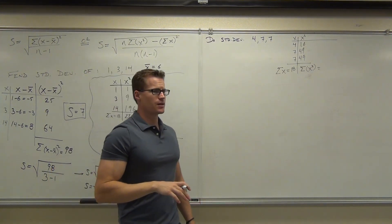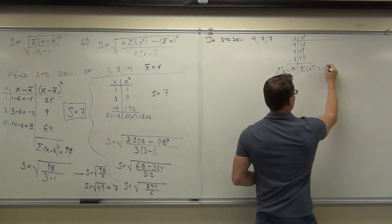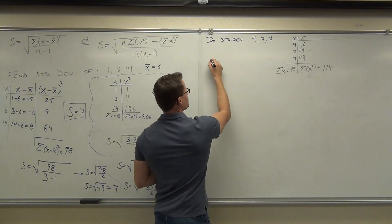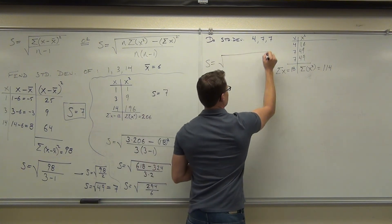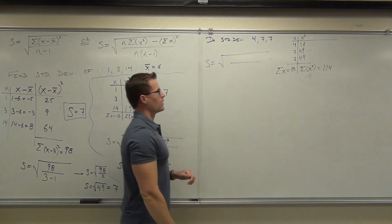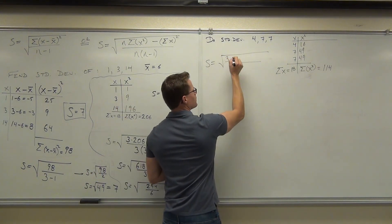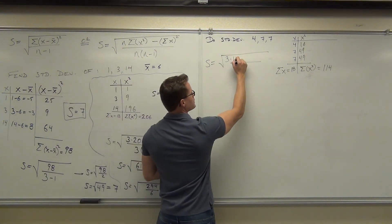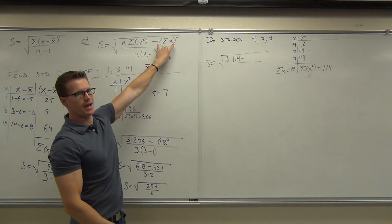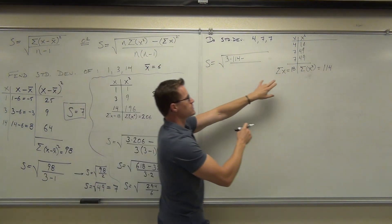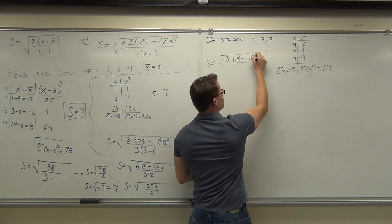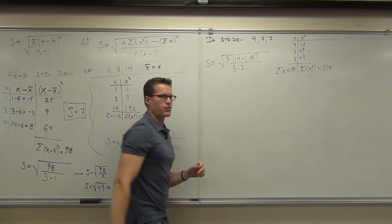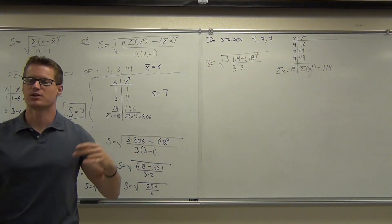So when I add those together, we're ready to plug this into our second formula. So our standard deviation — we'll have a square root. Our n is still 3. We'll start with a 3 on the numerator times the sum of our x-squareds, which in this case is 114, minus the sum of x squared. So we'll take this column and square it. After that, we divide by 3 times 2 — the 3 is n, the 2 is coming from n minus 1.